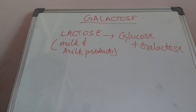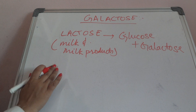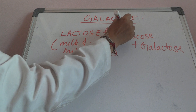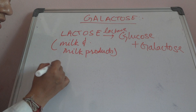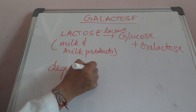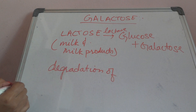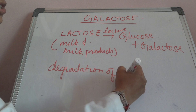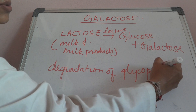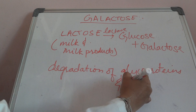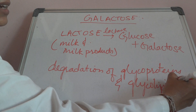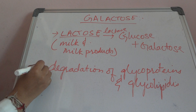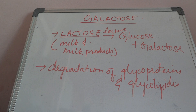Whenever lactose enters the body through milk and milk products or through the diet, the enzyme lactase acts on it, breaking down the lactose to glucose and galactose. Galactose can also be produced through the degradation of glycoproteins and glycolipids. So there are two sources: breakdown of lactose, and lysosomal degradation of glycoproteins and glycolipids.